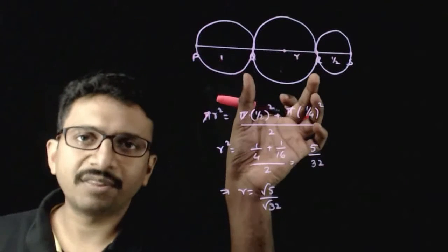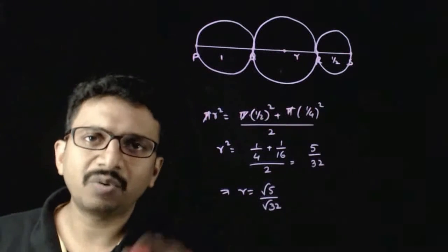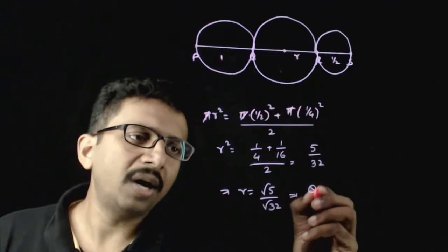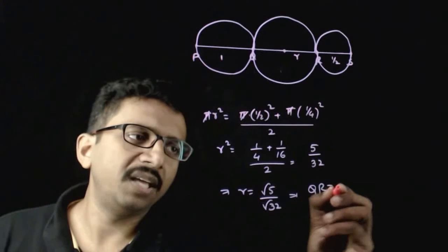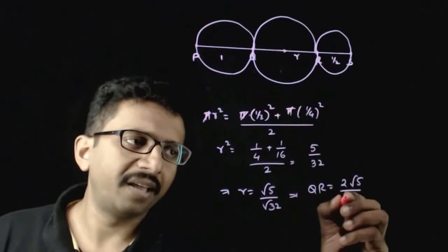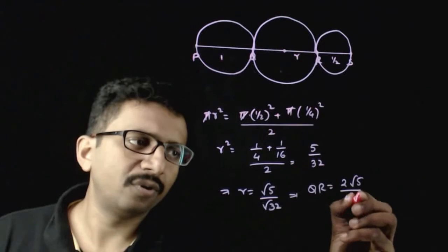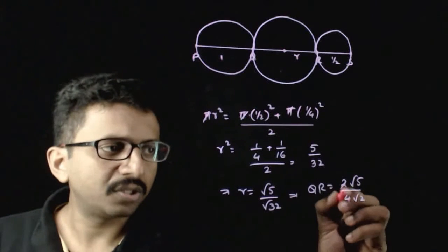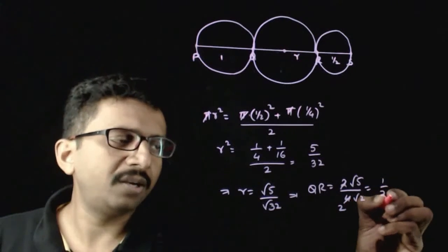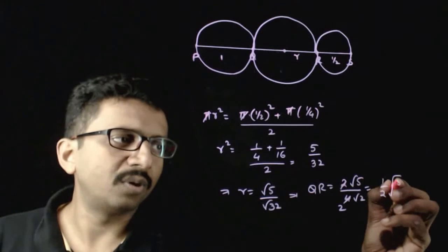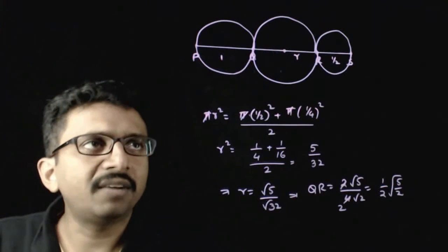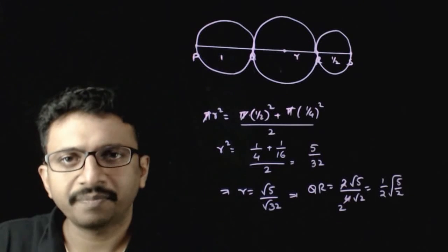What will be the length of QR? QR will be equal to twice the radius. This implies QR equals 2 times root 5 divided by 4 root 2. The 2s cancel, giving QR equal to (1/2) times root(5/2). That will be the length of QR.